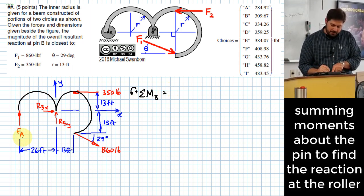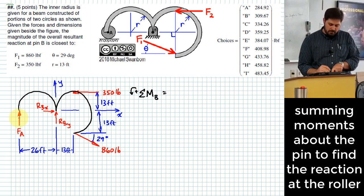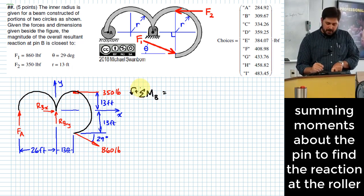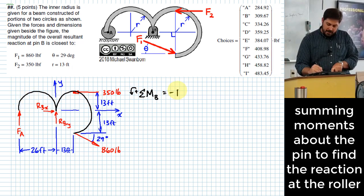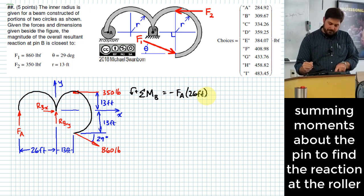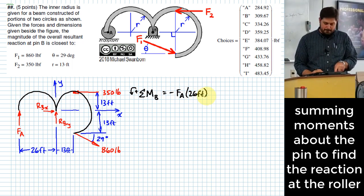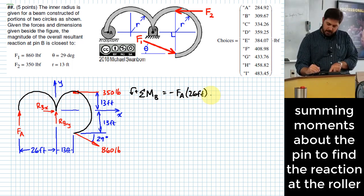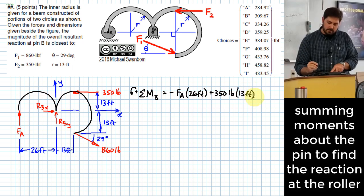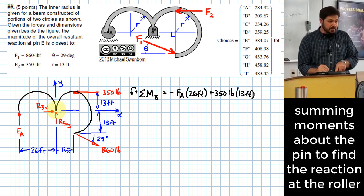So let's start on the left. FA, does a clockwise or counterclockwise influence around point B? Clockwise. Since I'm taking counterclockwise to be positive in my assumption direction, then I'll say this is negative FA times 26 feet. Then what? Plus 350 times what? 13. Why is it plus? It tends to be a counterclockwise influence around point B.